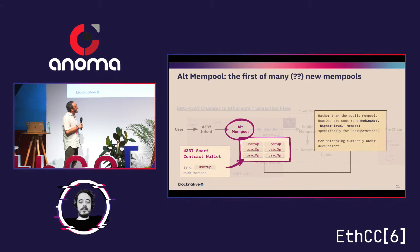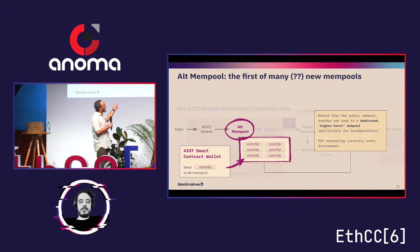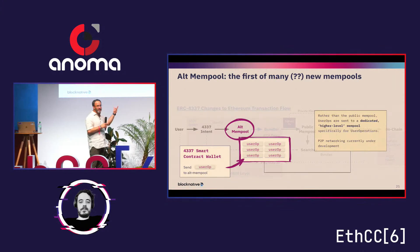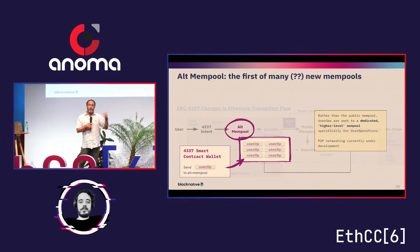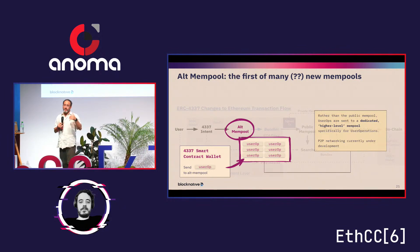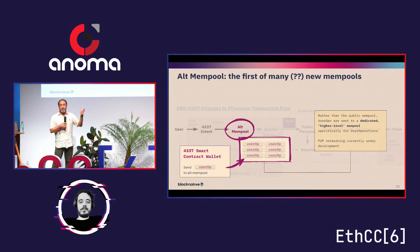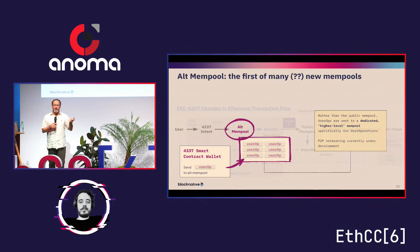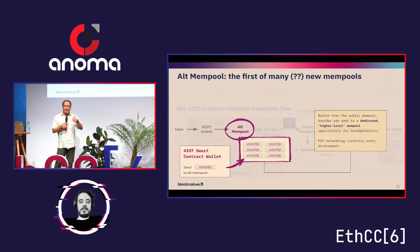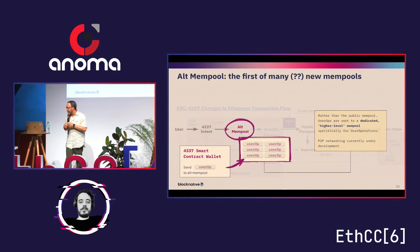These user ops go into alt mempools. The peer-to-peer layer of the alt mempools is still basically being developed right now, so while we think of 4337 as here and now, there's still a lot happening underneath. Fundamentally, bundlers will each operate their own alt mempool — so for every bundler you may have a distinct alt mempool. It starts to get confusing: which bundlers are being used where, which wallets communicate with which bundlers.